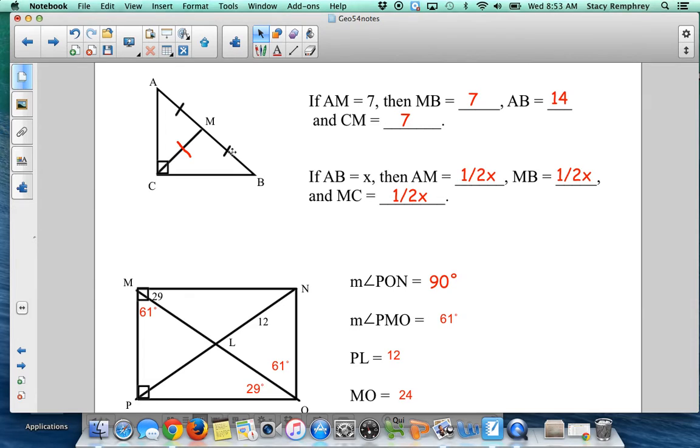So you can see the congruences I marked. So I think it's pretty clear. MB is seven because they were marked congruent. AB is 14 because I need two sevens to make that. And then CM is also going to be seven because it is equidistant. M is equidistant from each vertex.